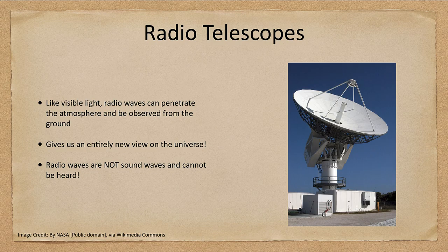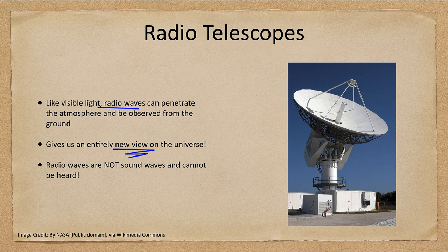So what is a radio telescope? One of the advantages is that radio waves can penetrate the atmosphere, so we can observe them from the ground. This gives us a new view on the universe because we're now seeing things at a different wavelength than visible light, meaning some objects give off radio waves but are invisible in ordinary visible light, allowing us to sometimes see objects we could not otherwise see.